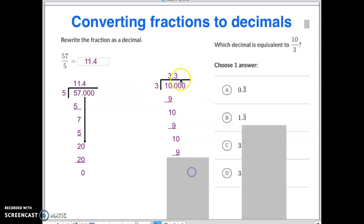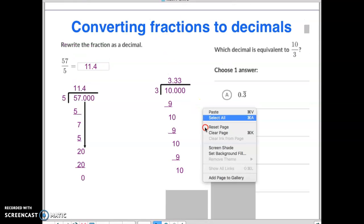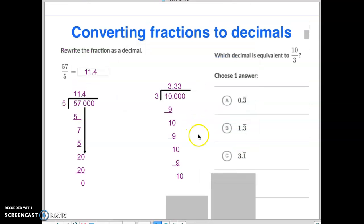And 3 goes into 10 three times. 3 times 3 is 9. And then 10 minus 9 is 1. Have you noticed we keep getting 1 and 1 and 1? This is never going to stop. We can bring down another zero. But then it's going to be 9 again. And it's just going to continue going on forever and ever. It's going to be another 3 and so on and so on and so on forever. Do you notice how that 3 keeps repeating? It's called a repeating decimal.